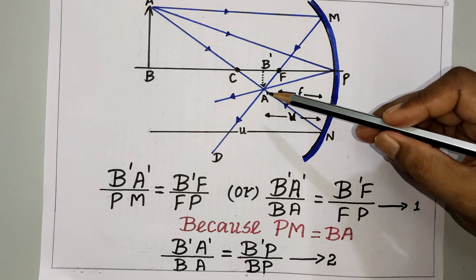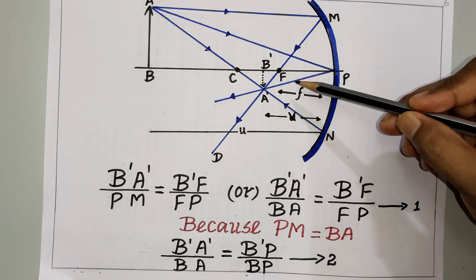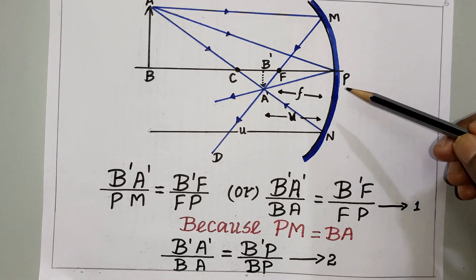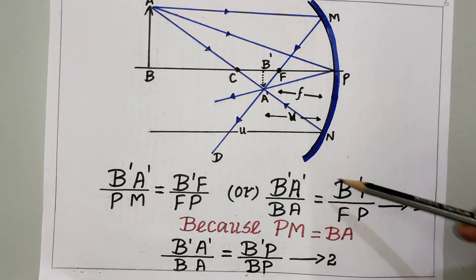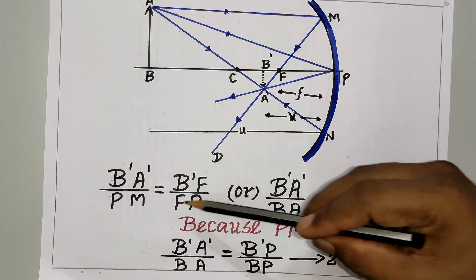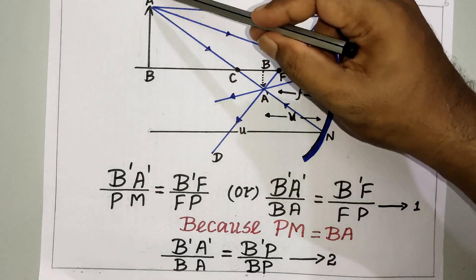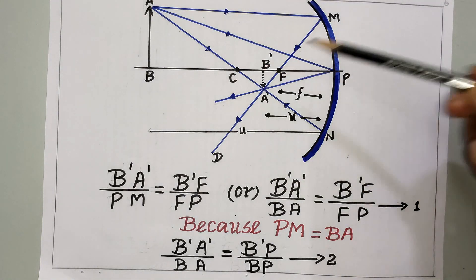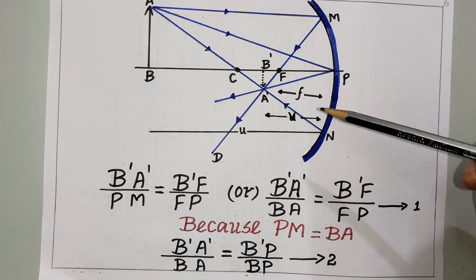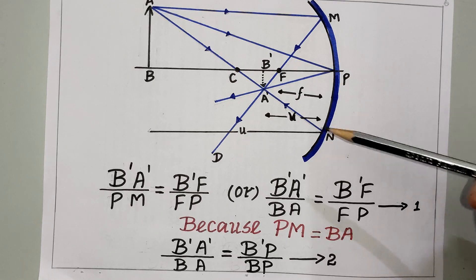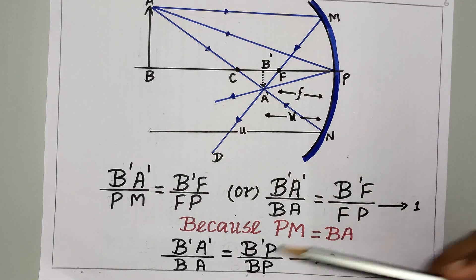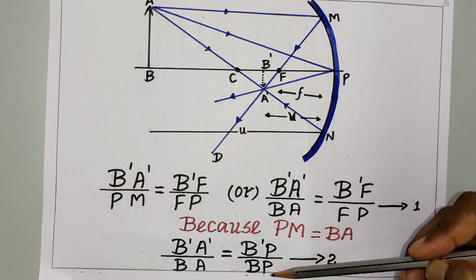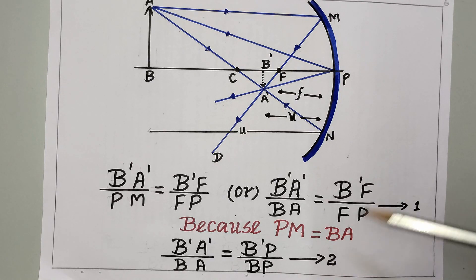Consider the two similar triangles A'B'F and MPF. From these similar triangles we get the proportion: B'A' / PM = B'F / FP. Since PM equals BA, this becomes B'A' / BA = B'F / FP — this is equation 1. We also have similar triangles A'B'P and ABP, giving B'A' / BA = B'P / BP — this is equation 2.